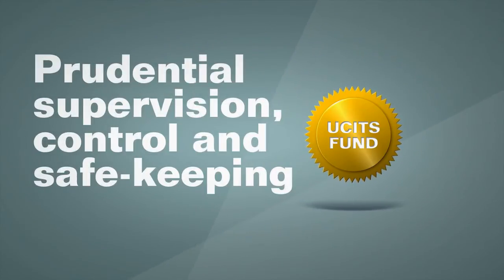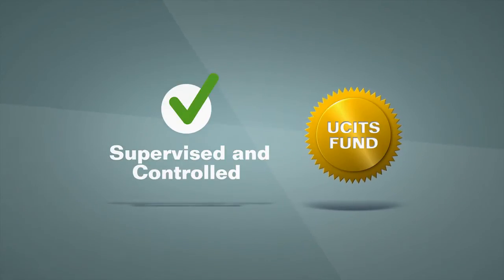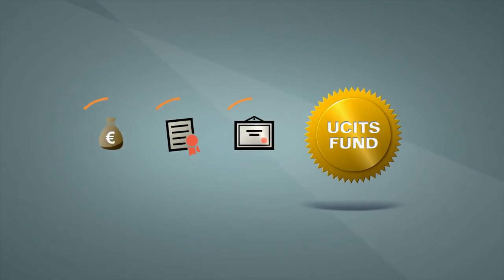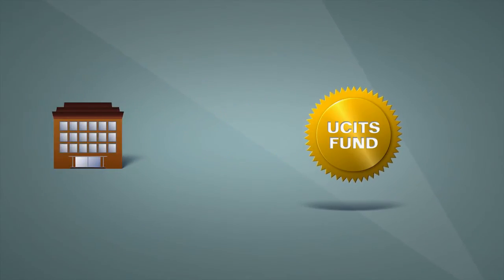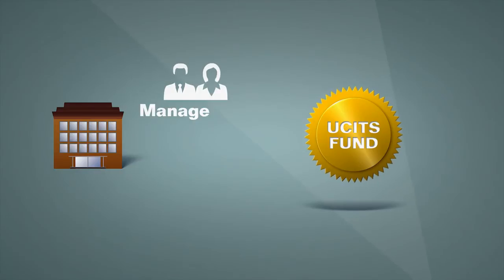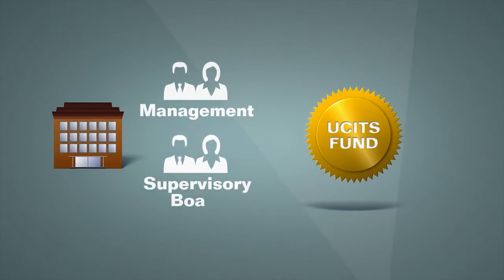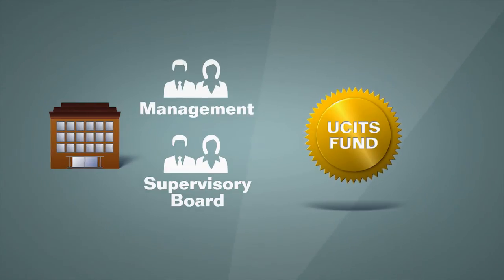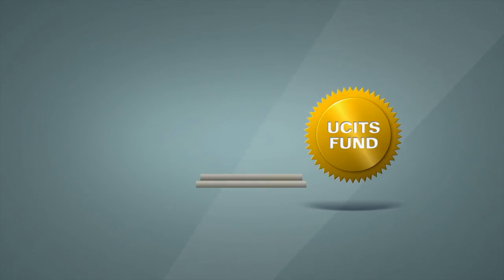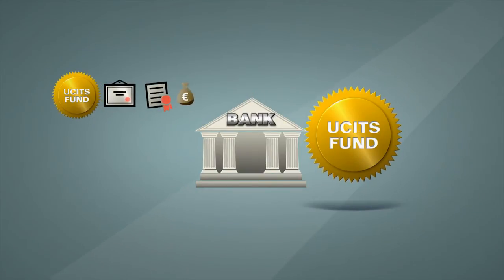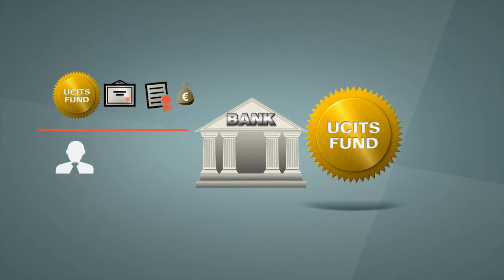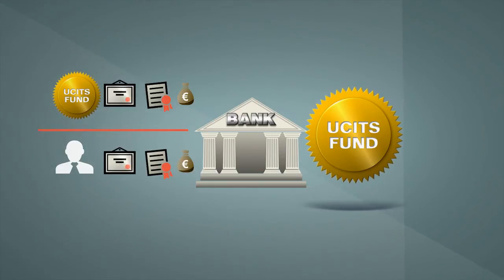Prudential supervision, control and safekeeping: UCITS are supervised and controlled on different levels, and their assets are protected in a special way. Fund management companies must have a clear structure with a qualified management team and an independent supervisory body or administrative board that acts in the best interests of the investors. Another important task is fulfilled by the custodian bank, which holds the UCITS' assets and maintains a clear separation between the assets held by the UCITS and those assets held by other investors.